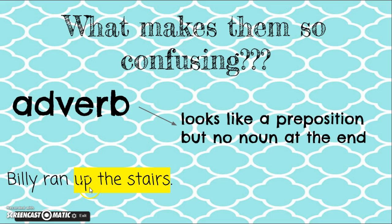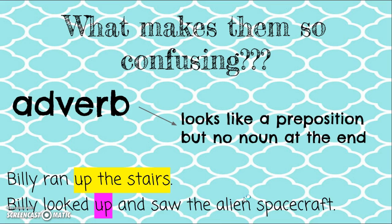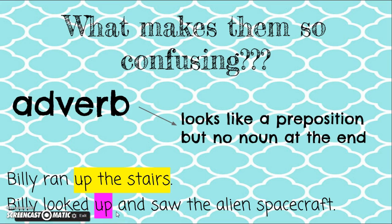'Billy ran up the stairs' — where did he run? Up the stairs. 'Stairs' is the noun at the end of the phrase; it's the object of the preposition. But in 'Billy looked up and saw the alien spacecraft,' there's no noun that comes right after 'up.' It's just telling you where he looked — he looked up. It doesn't say 'up in the sky' or 'up above him.' So when you see one of these words that looks like a preposition but there's no noun following it, then it's an adverb.